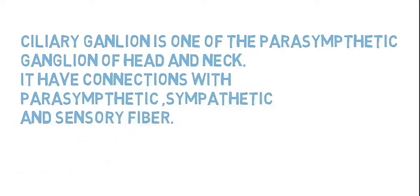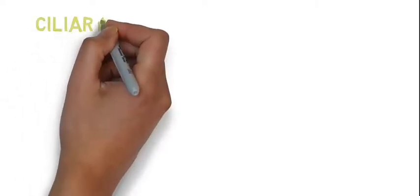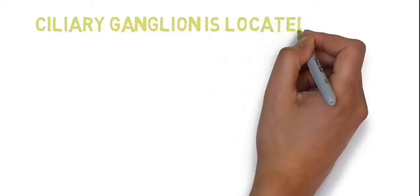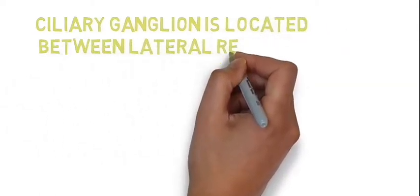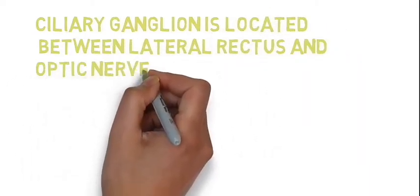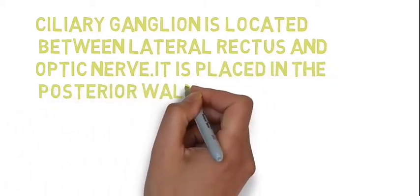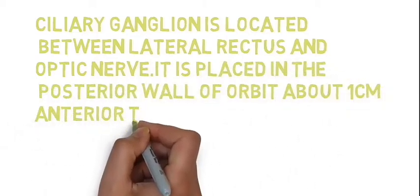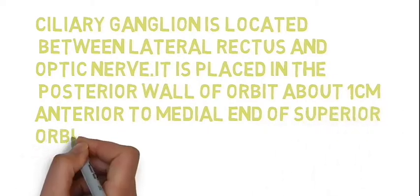Let's see where the ciliary ganglion is situated. The ciliary ganglion is located between the lateral rectus and optic nerve. It is placed in the posterior wall of the orbit, about 1 cm anterior to the medial end of the superior orbital fissure.